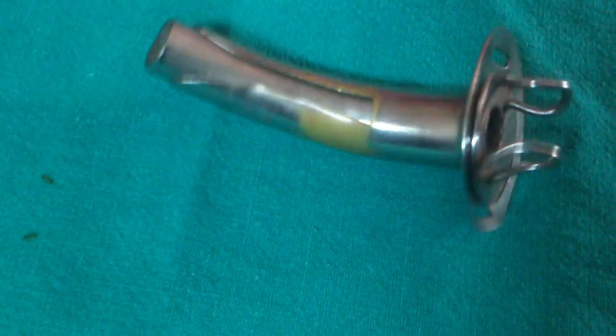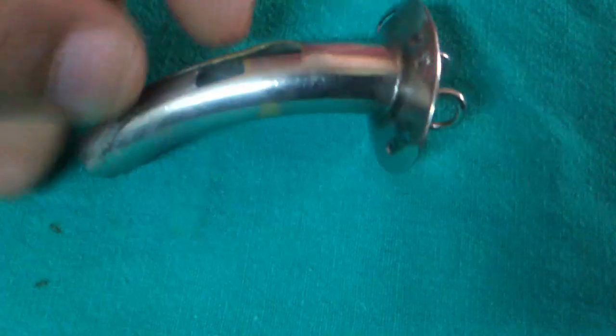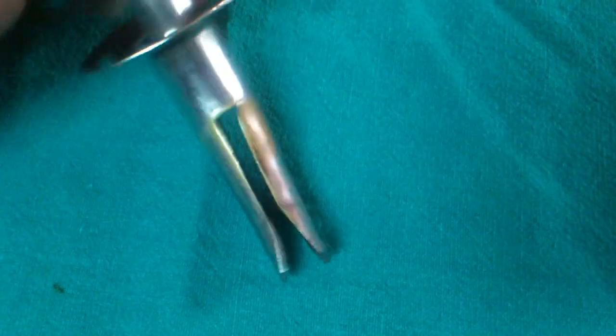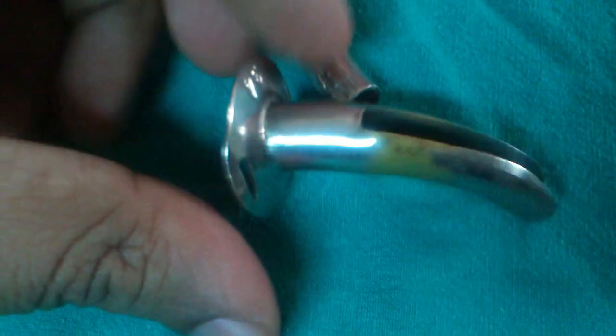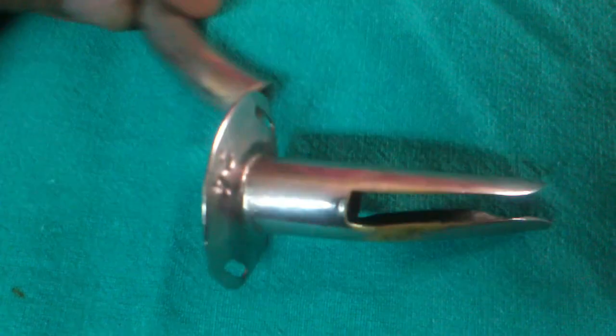This is the Fuller's bivalved metallic tracheostomy tube. It is called bivalved because the outer tube is split and the two flanges act as a valve which can be compressed to introduce into the trachea, and therefore we don't require an introducer.